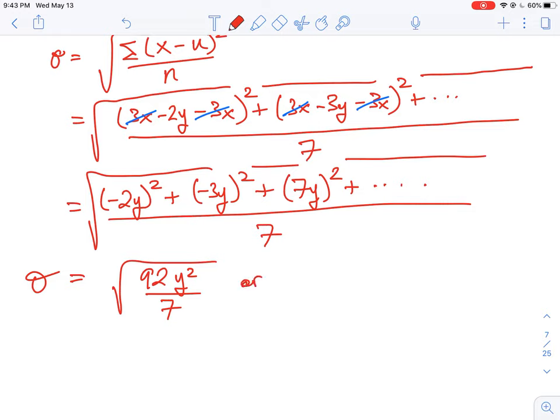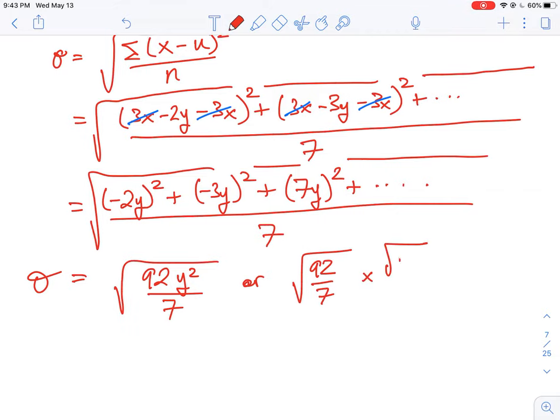Now if we're going to simplify this, we can split this up. So our rules for the radicals say we can go the square root of 92 over 7 times the square root of y², which is equal to this number in radical form times the value of y. So our standard deviation does not even depend on the variable x, it only depends on the variable y times a coefficient of the square root of 92 by 7.